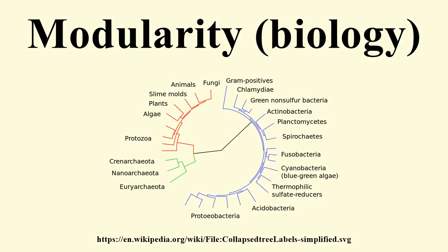Stabilizing selection: while seeming antithetical to forming novel modules, Wagner maintains that it is important to consider the effects of stabilizing selection as it may be an important counterforce against the evolution of modularity. If ubiquitously spread across the network, it could be a wall that makes the formation of novel interactions more difficult and maintains previously established interactions. Against such strong positive selection, there would need to be other evolutionary forces acting on the network through which gaps of relaxed selection could allow focused reorganization to occur.